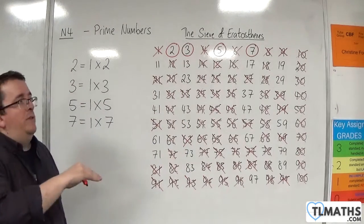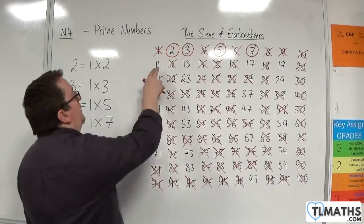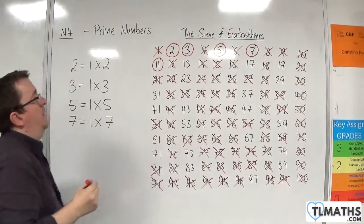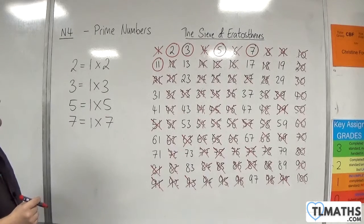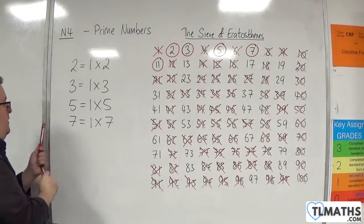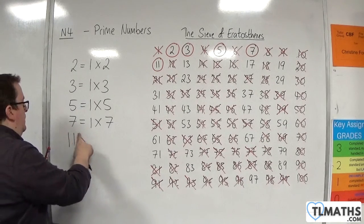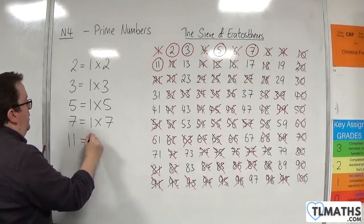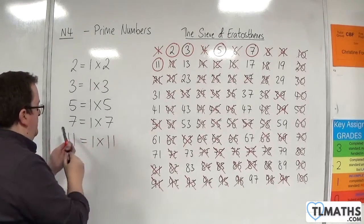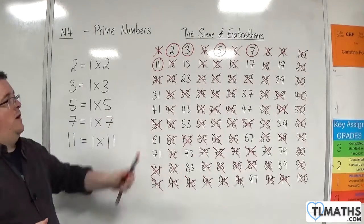So the next number in the list that isn't crossed off is eleven. That must therefore be prime. So eleven is a prime number. I'll write it down here. I'm going to run out of space on this side so that's as far as I'll go here.